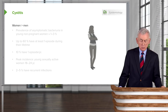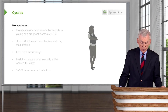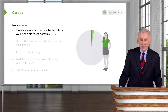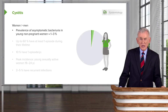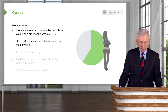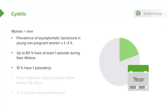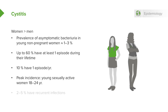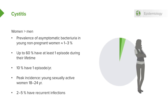Cystitis is a disease much more common in women than men. Women have an incidence of asymptomatic bacteriuria of around 1–3%. Up to 60% of women have had at least one episode of cystitis during their lifetime, and 10% have it once a year. The peak incidence is among young, sexually active women 18–24 years of age, and 2–5% have recurrent problems.